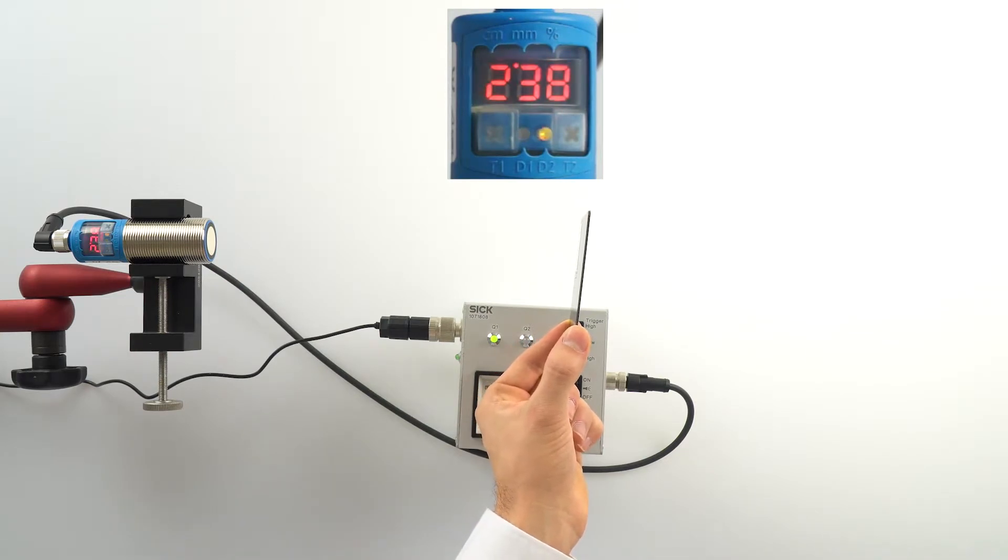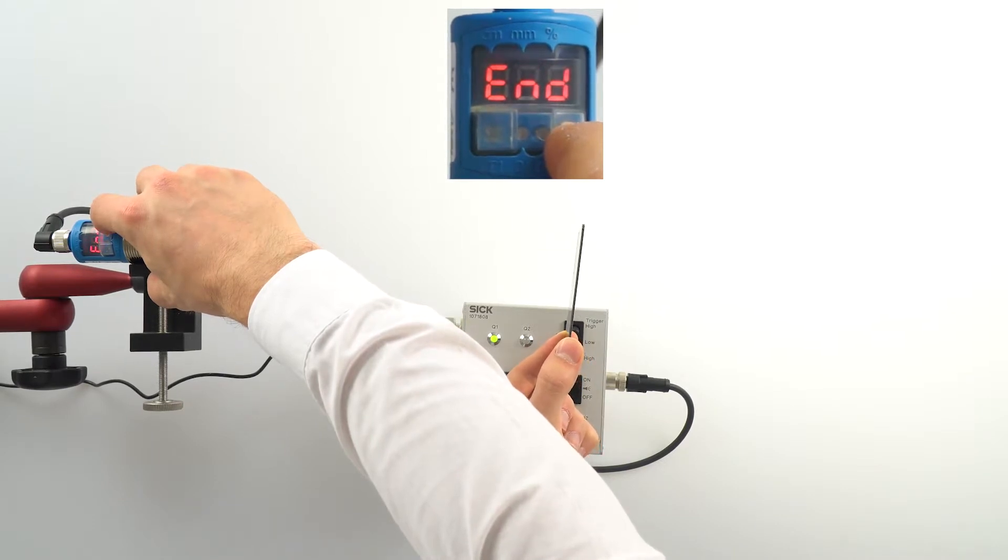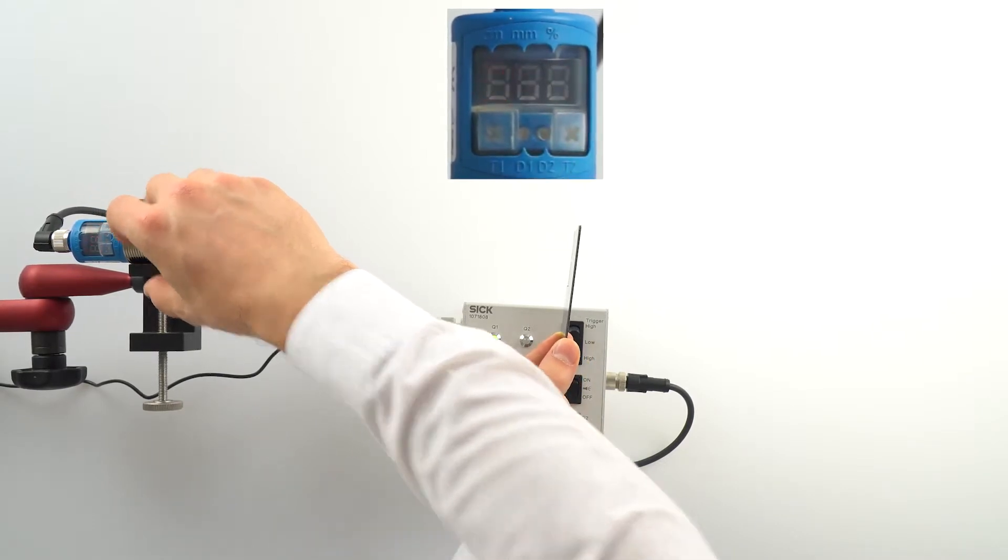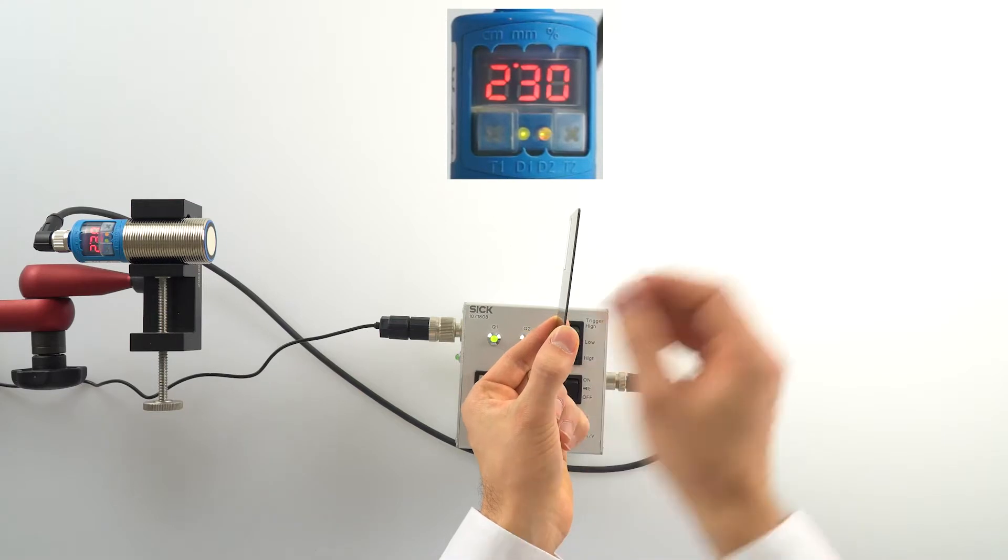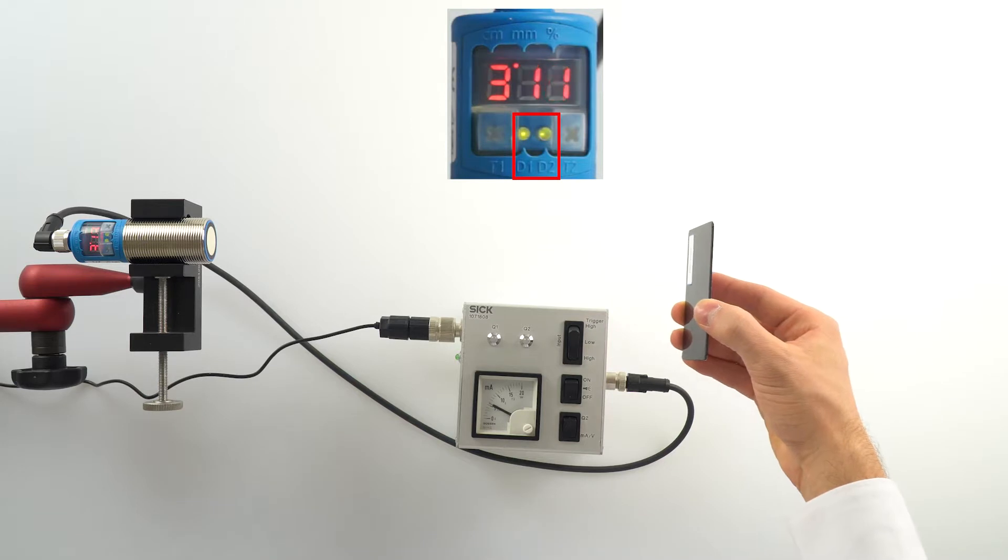Press and hold T2 until end appears in the display, and now the limit switching point is saved. Now you are below the switching point, and now you are above the switching point.